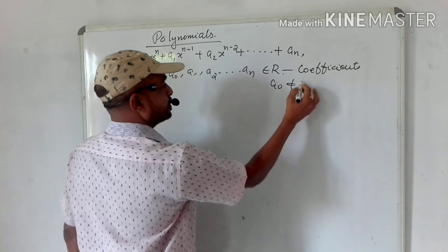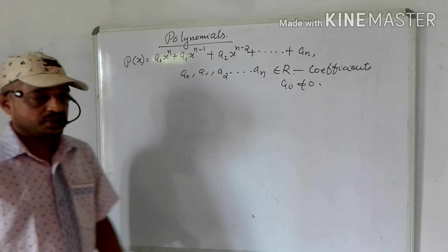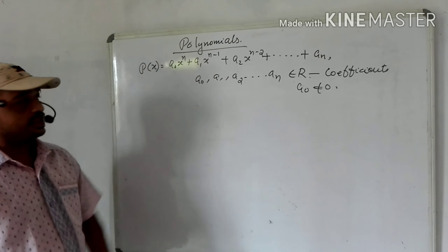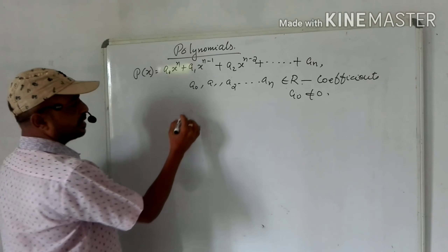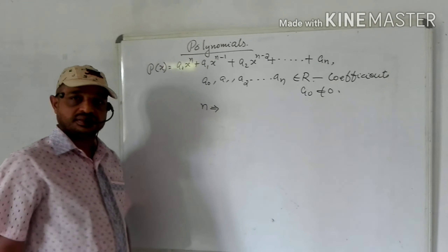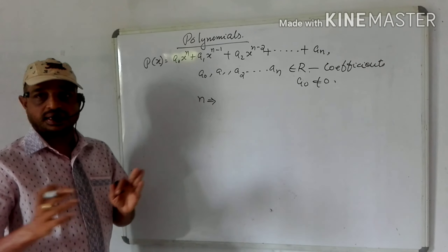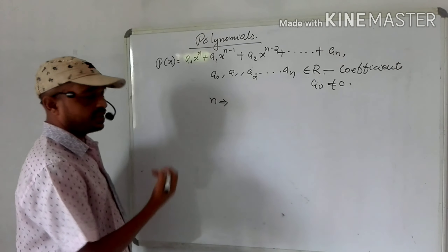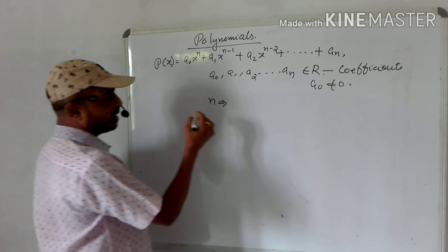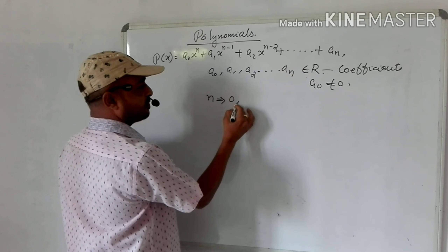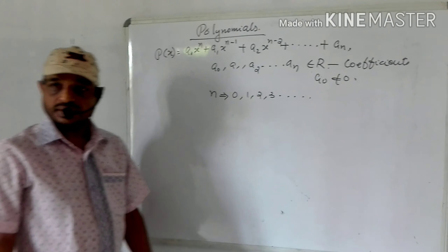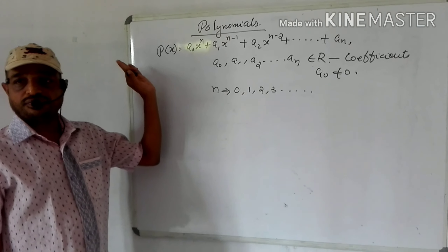Also, a₀ should not be equal to 0. The power n should be a non-negative integer — meaning n can take values 0, 1, 2, 3, and so on.